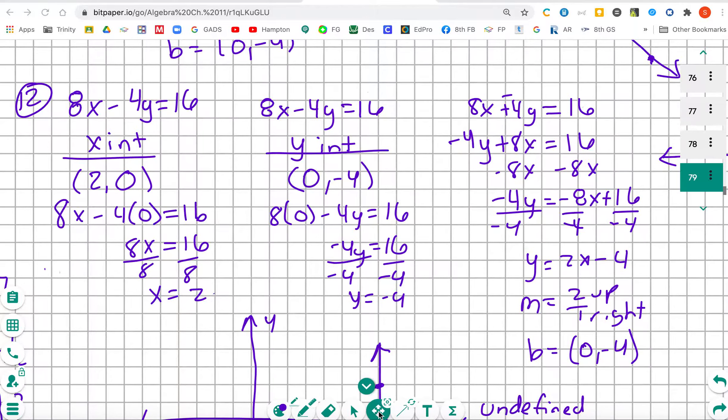Starting with problem number 12. We have 8x minus 4y is equal to 16.